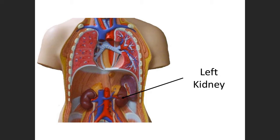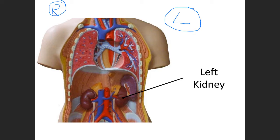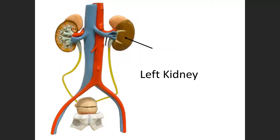Make sure that you are able to identify the anatomical left and right sides. Obviously this model is facing us, so our right is this model's left. Also, I know it's the left kidney because the right kidney is lower than the left. Does anyone know why the left kidney is higher than the right? The liver — the liver pushes the right kidney down. So your left kidney is identified here, a little bit higher than the right.